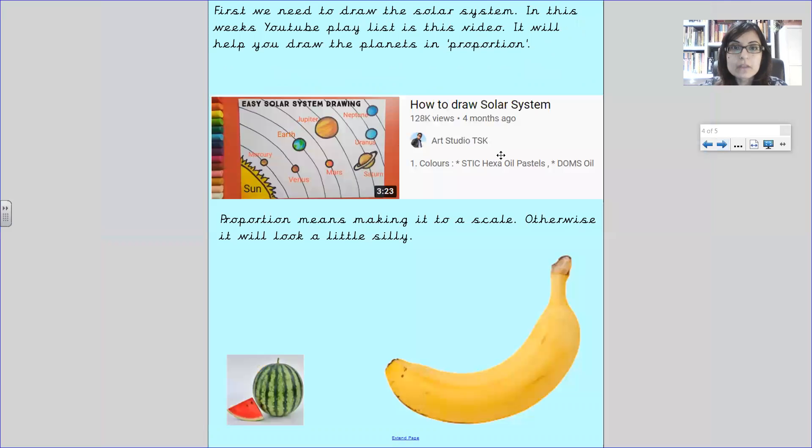To help you there is a video clip. This video clip is in the playlist where all the year two videos are. So again, we're going to draw the solar system. Before you draw it, watch the video all the way through and then watch it again to help you draw the planets.